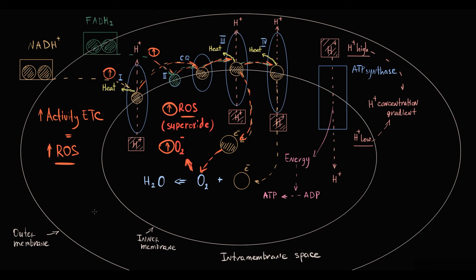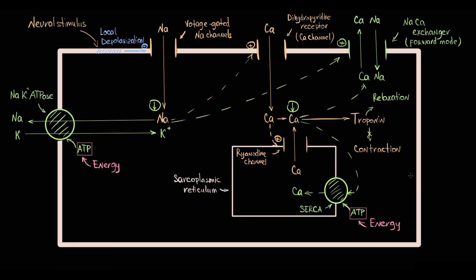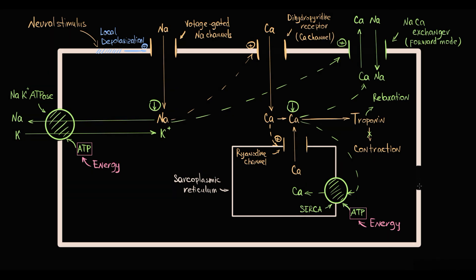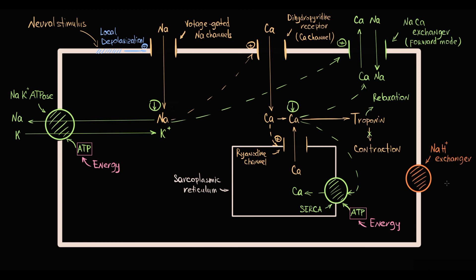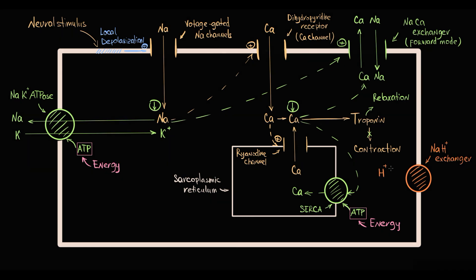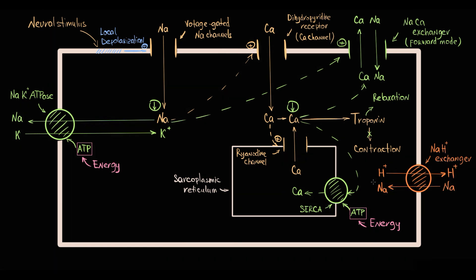Cardiomyocytes are also able to regulate intracellular pH. pH regulation is provided by the sodium-hydrogen exchanger, located on the sarcolemma. This exchanger regulates intracellular pH by transporting hydrogen molecules out of the cell and sodium molecules into the cell, making intracellular pH more alkaline. Importantly, the activity of this exchanger causes an increase in intracellular sodium level.